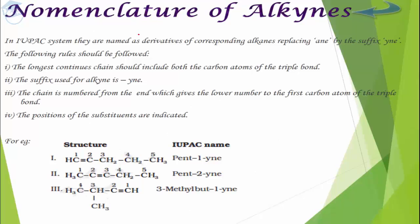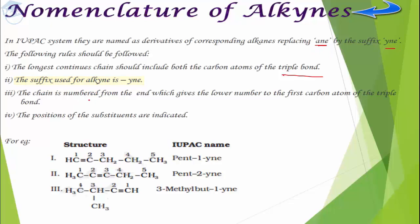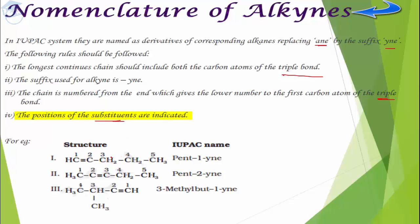Next is nomenclature — it is simple, just like alkanes and alkenes. The difference is that instead of the suffix '-ane', we replace it with '-yne'. The rules are similar: first, form the longest carbon chain containing the triple bond, remove '-ane' and add '-yne', and number the chain so that the triple bond gets the lowest possible number.